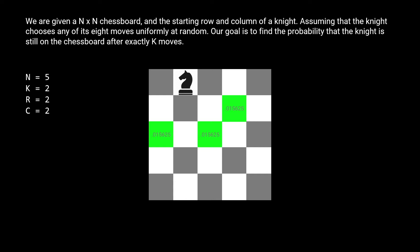These three that I've highlighted green. For each of these green squares, there is a 0.015 chance of being landed on, because there is a 0.125 chance of the knight being on this position after the first move, and there is a one-eighth or 0.125 chance of going to each of the green squares after. So 0.125 times 0.125 is 0.015625 for each of these squares.